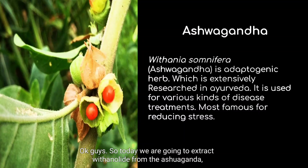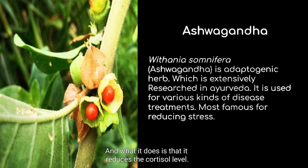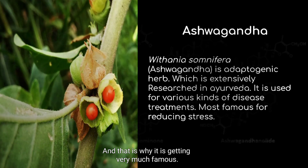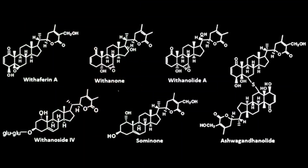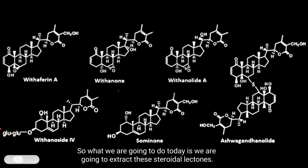Today we are going to extract withanolides from ashwagandha. Ashwagandha is an adaptogenic herb and what it does is reduce the cortisol level, which is why it is getting very much famous. These are the chemicals responsible for reducing stress.